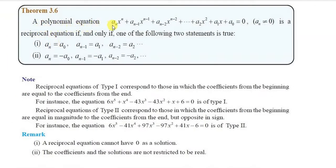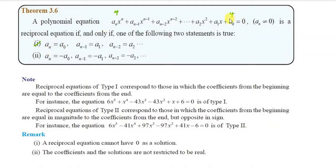A polynomial equation a_n x^n plus a_{n-1} x^{n-1} plus ... plus a_0 equals 0, where a_n is not equal to 0, is a reciprocal equation if one of the following two statements is true. The first statement corresponds to a_n equal to 4.